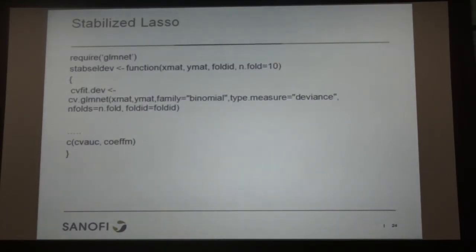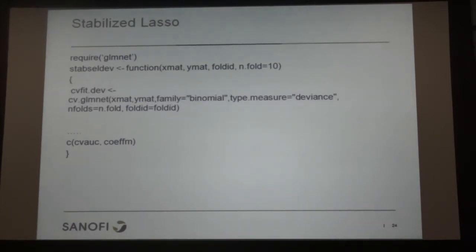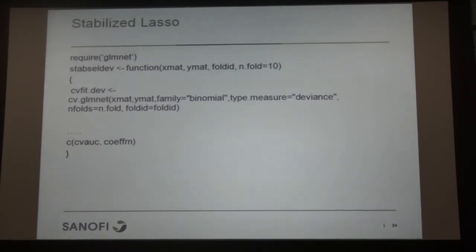For those who like code, we use a very nice package called glmnet in R, which can do LASSO. The X matrix is all the gene expression data, Y is the binary response outcome, family is binomial because the outcome is binary corresponding to the binomial distribution, and the type of measure is deviance — though you can also use AUC of the ROC curve. Then we run cross-validation and return the result.